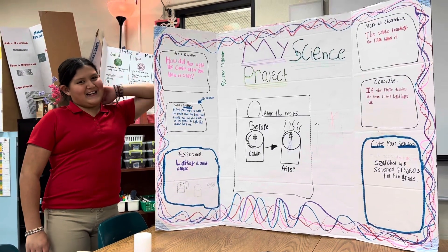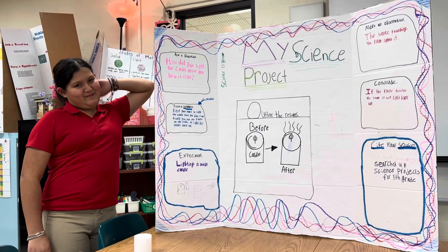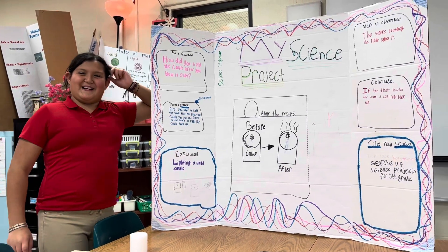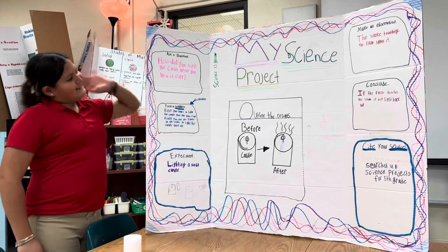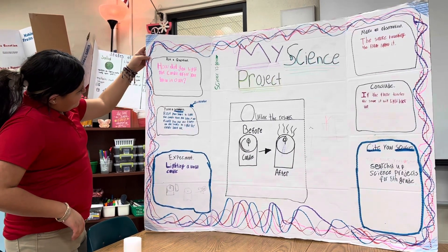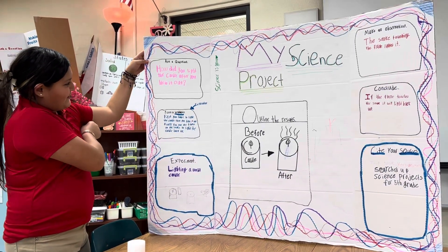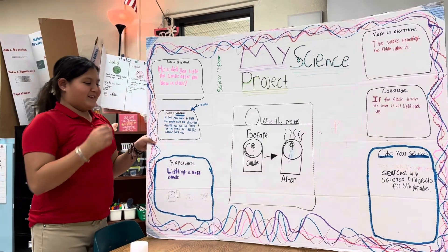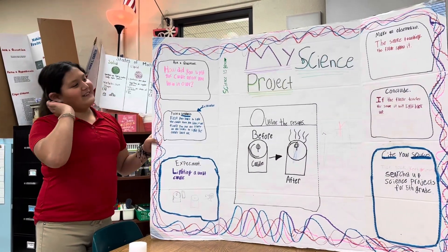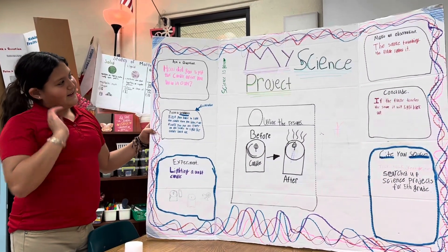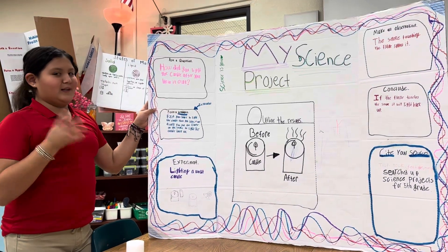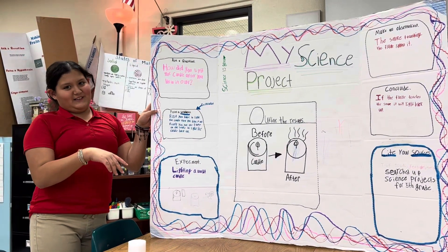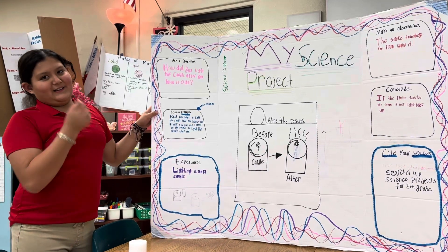Hi, my name is Hailey. I'm going to be doing my science project. How did you light the candle after you blew it out? So the way I'm going to light the candle is that after I blow it out, there's going to be smoke and I'm going to make the fire touch the smoke so that it can light.